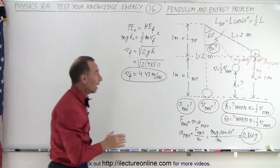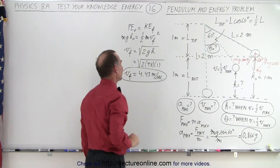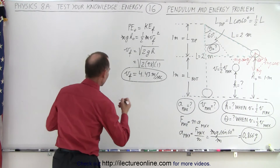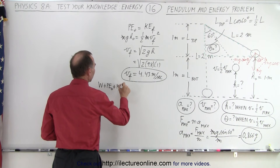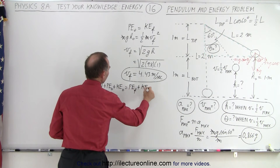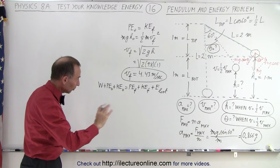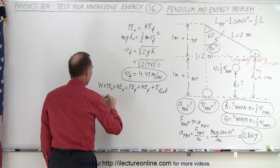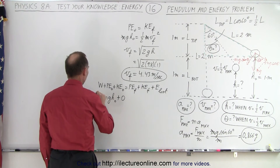Now we find the height of the pendulum when the velocity is half v max. We use the energy equation: any work input plus initial potential energy plus initial kinetic energy equals final potential energy plus final kinetic energy plus energy lost to friction. With the pendulum there is no friction and no work input, so we have mgh initial plus zero kinetic energy and zero work in.